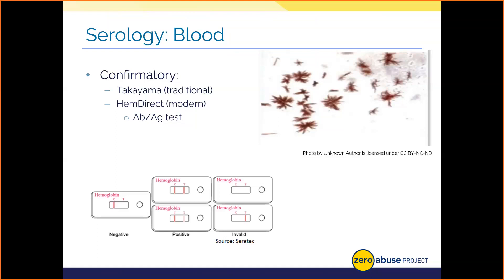Our old method of antibody-antigen testing involved pitting antibodies against possible antigens — human blood in this case — in a Petri dish, requiring a whole day of waiting, whereas HemeDirect only takes a few minutes. If blood is applied to this testing cartridge, it'll turn colors akin to a pregnancy test, with lines indicative of the final result.